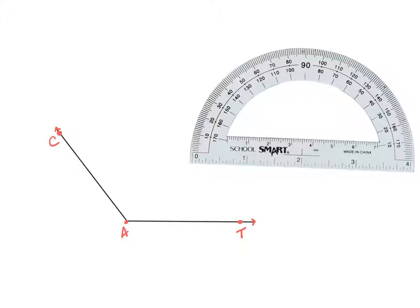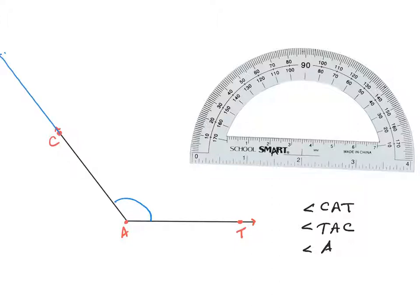Let's look at another example. This angle would be called angle CAT, angle TAC, or just angle A. This time we are measuring a larger angle — angle CAT is obtuse because it is larger than 90 degrees. My first task is again to extend each of the rays so they will reach all sides of my protractor. You'll want to do this with a straight edge to make sure you have straight rays.